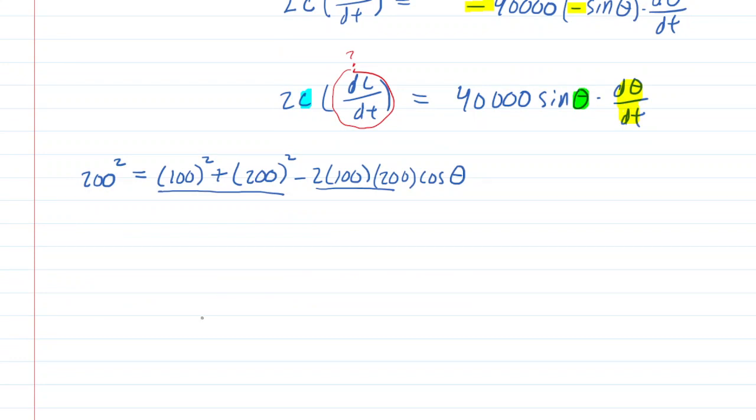Now on the left side, we do 200 squared, we get 40,000. We've already done 100 squared plus 200 squared, that was 50,000. And then over here we have the minus 40,000 cosine of theta.